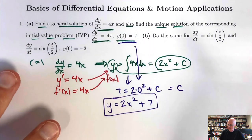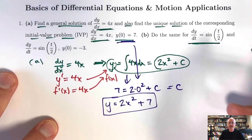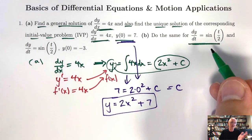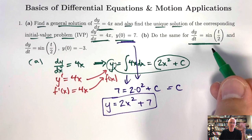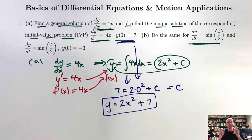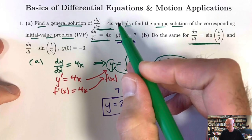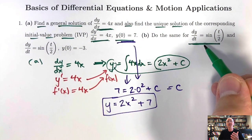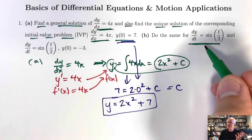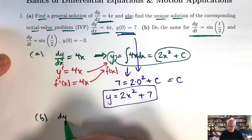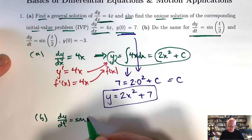In part B, the first thing you notice is that the independent variable name has changed from x to t. That's fine. If your independent variable represents a distance, it's more traditional to use x; if it represents time, it's more natural to use t. The differential equation is dy/dt = sin(t/2). The right-hand side just depends on the independent variable t.